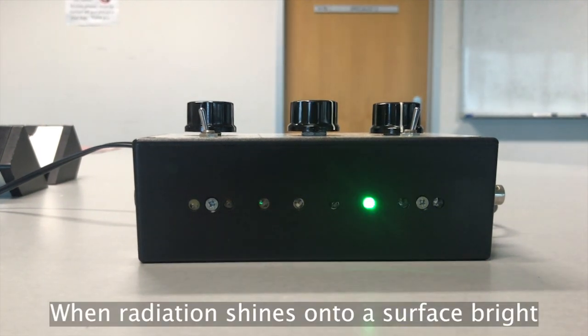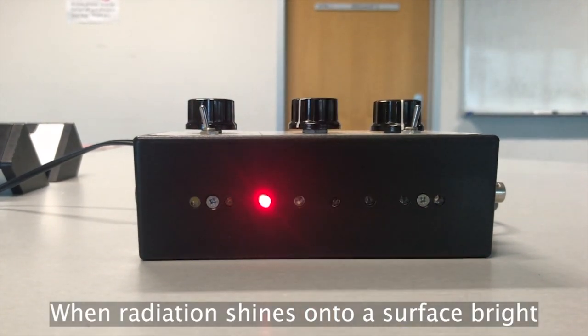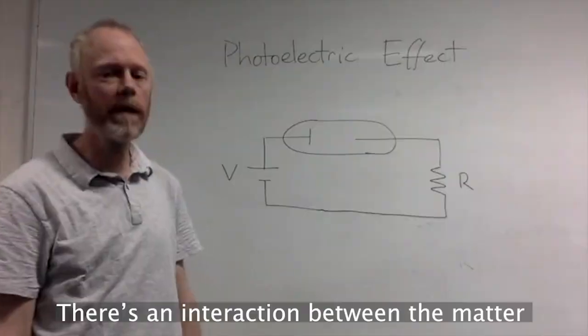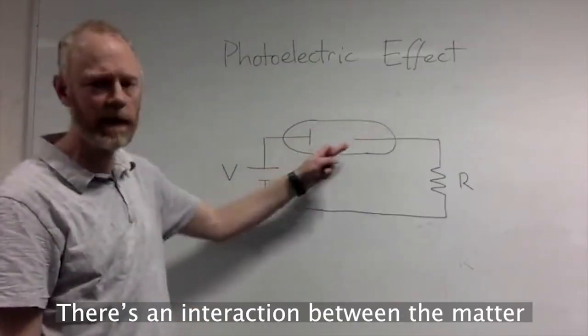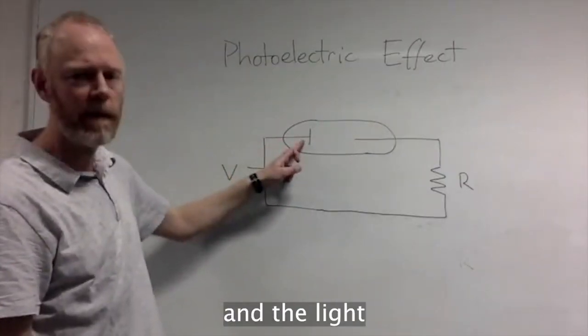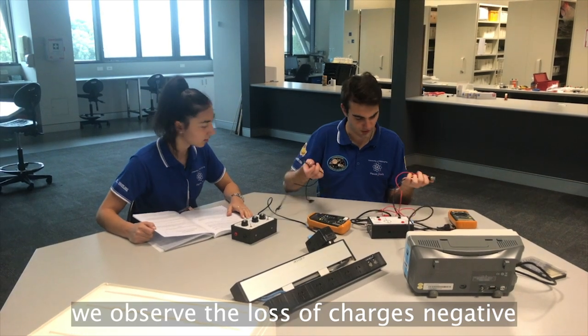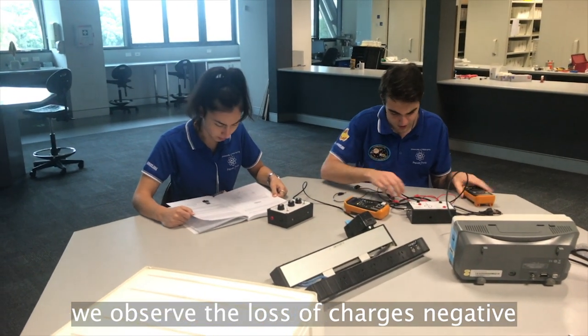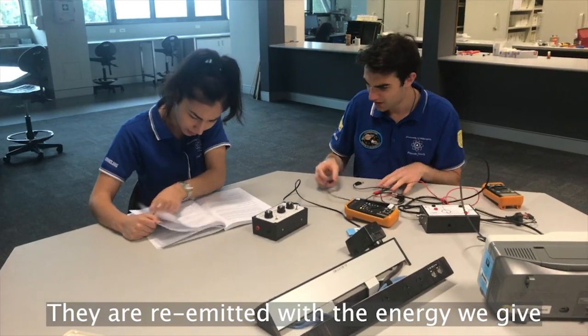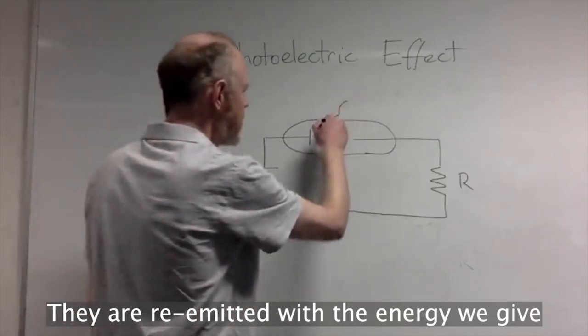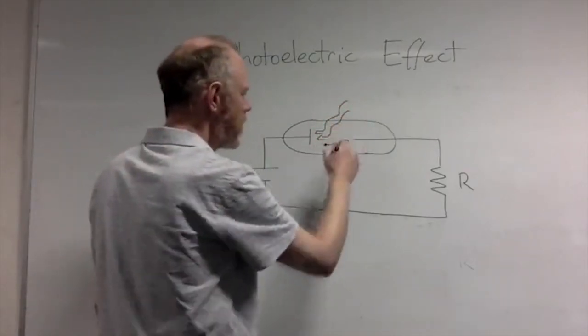When radiation shines onto a surface bright, there's an interaction between the matter and the light. We observe the loss of charges negative, they are emitted with the energy we give.